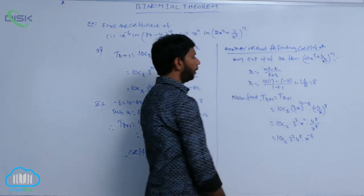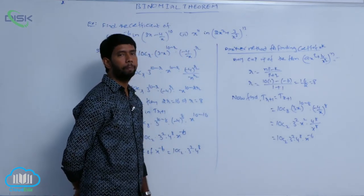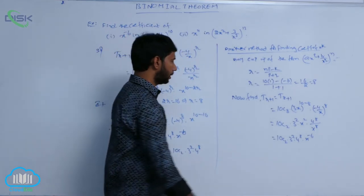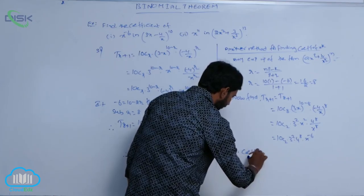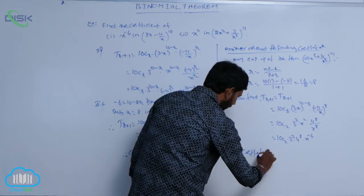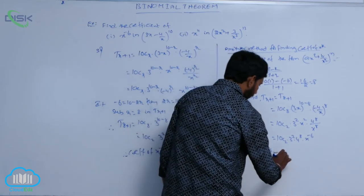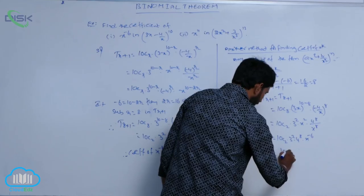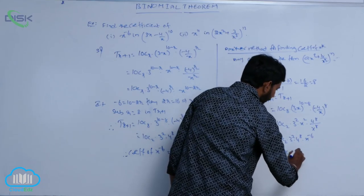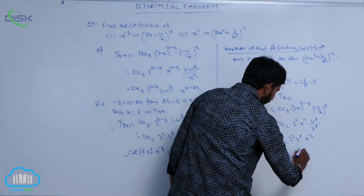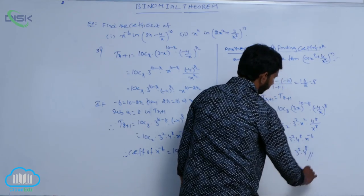Here, using the rule a power m by a power n is of the form a power (m minus n). Therefore, coefficient of x power minus 6 is equal to 10C2 into 3 squared into 4 power 8. That is the coefficient of x power minus 6.